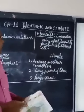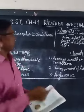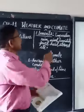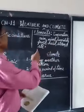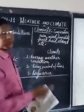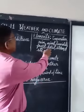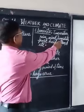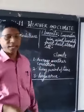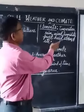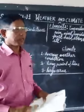The elements of weather and climate are temperature, rain, wind, humidity, frost, haze, storm, etc.